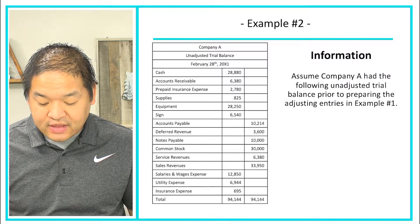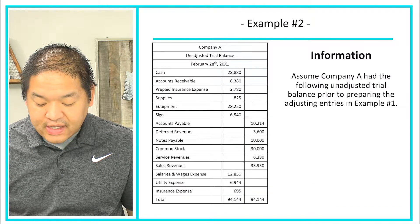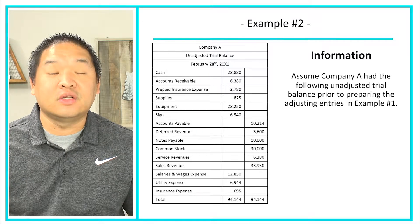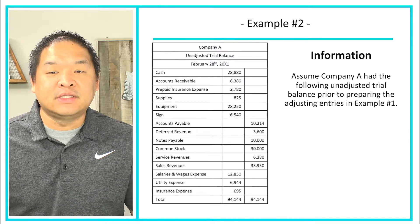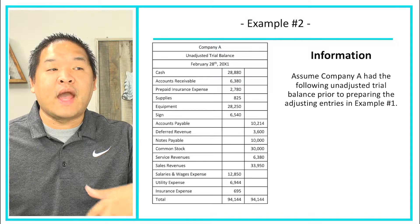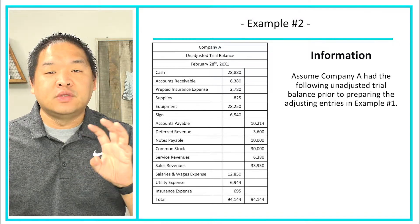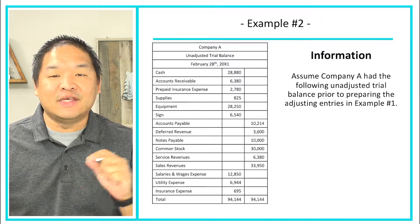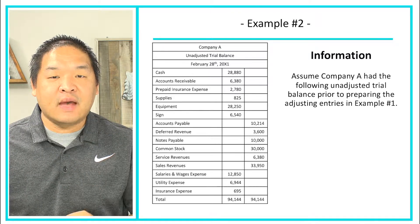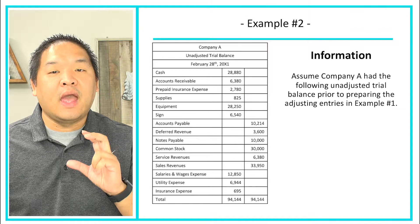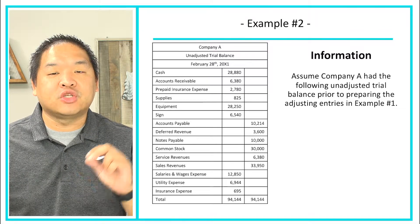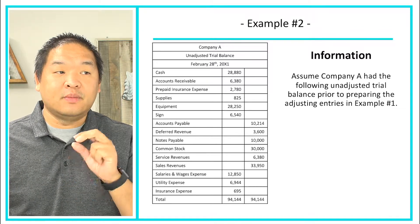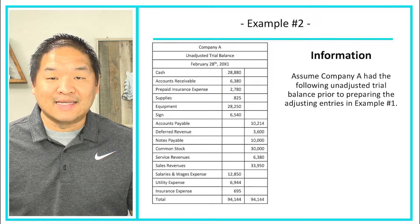Assume company A had the following unadjusted balances prior to preparing the adjusting entries that we did in example one. In example one, we actually did four entries — those are the four adjustment entries you learned in this section. In this example, we're going to take this trial balance and roll it forward based on the adjustments we did in the last section.